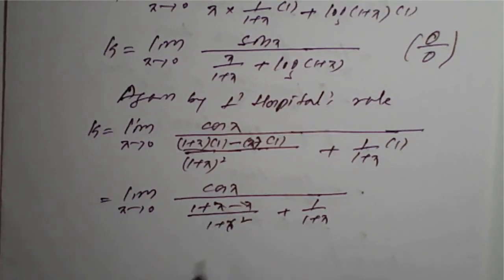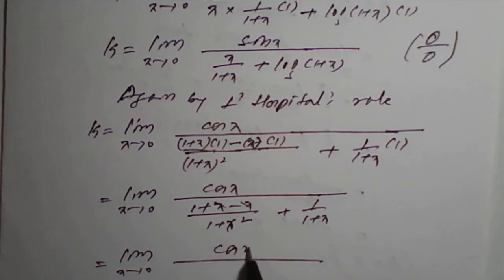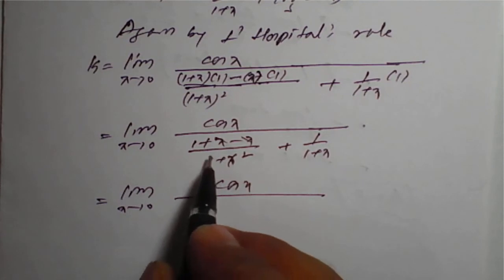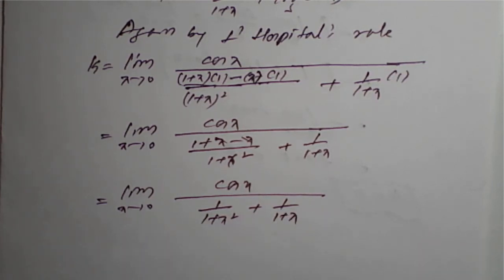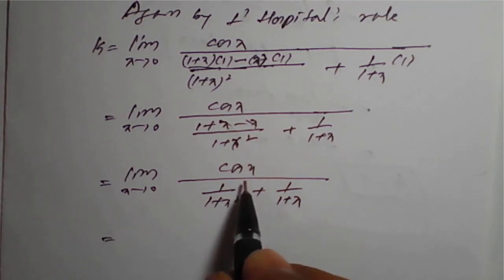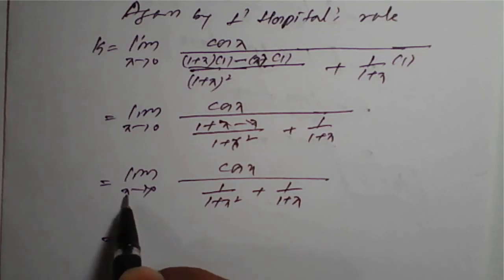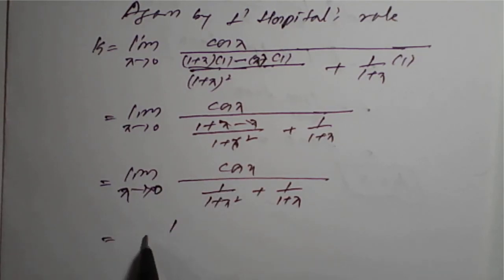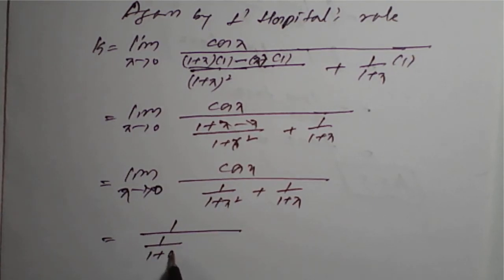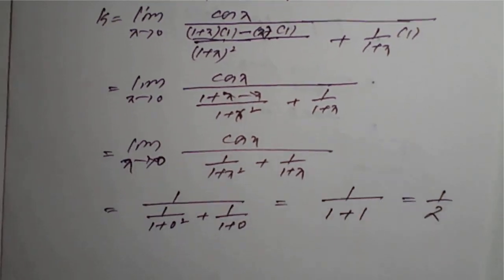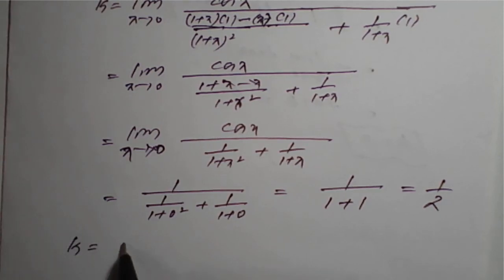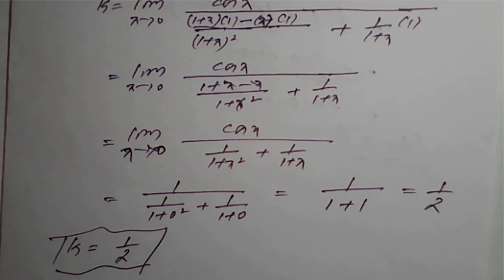On simplification, the x terms cancel in the numerator of that fraction, giving 1 over (1+x) squared plus 1 over (1+x). So k equals the limit as x tends to 0 of cos x divided by 1 over (1+x) squared plus 1 over (1+x). Applying x equals 0: cos 0 is 1, and the denominator becomes 1 over 1 plus 1 over 1, which is 1 plus 1 equals 2. Therefore k equals 1 by 2, which is the required solution.